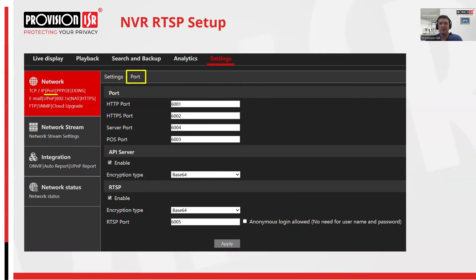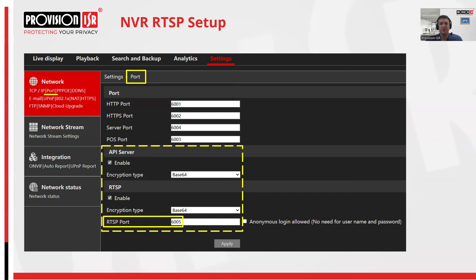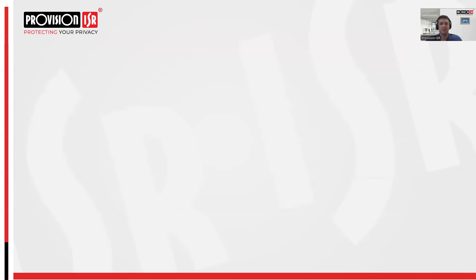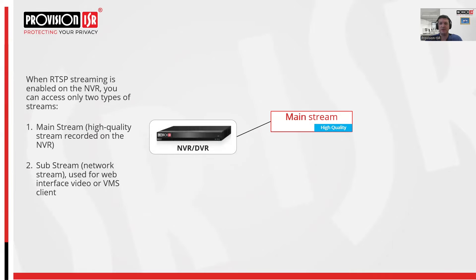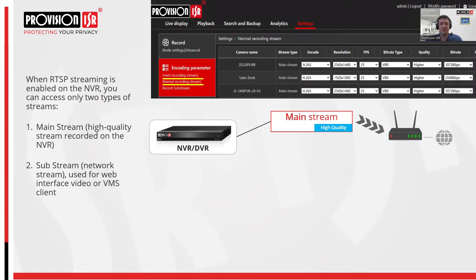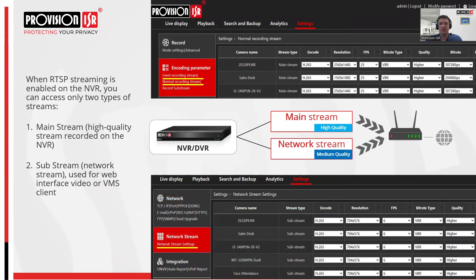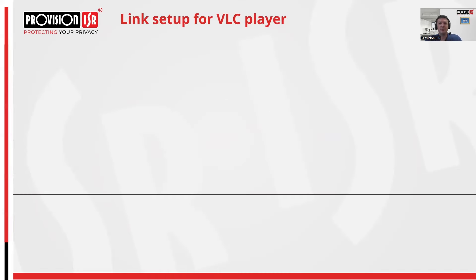To enable RTSP on the NVR, navigate to the network settings and locate the port tab. Here you should enable both the API server and RTSP with both encryption tabs set to base64. The crucial step is to specify the port number for the RTSP stream. This port number will be used for router redirection as well. When RTSP streaming is enabled on the NVR, you can only access two types of streams: main stream, which is generally used for recording on the NVR, or sub stream, which is generally used when accessing video via web GUI or the VMS clients.